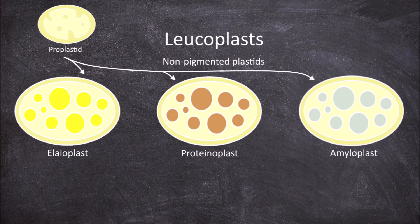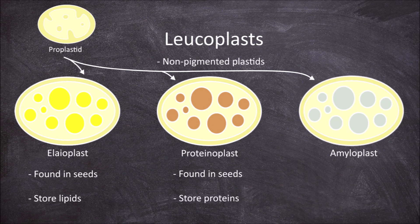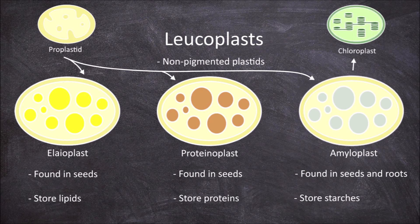The first of these, the elaioplasts, are commonly found in seeds and are specialised to store lipids. The second, the proteinoplasts, are also commonly found in seeds but are instead specialised to store proteins. The third, the amyloplasts, are found in seeds as well as roots and are specialised in storing starches. Amyloplasts can be converted into chloroplasts — for example, this is what happens when roots start greening on exposure to light. This process is sometimes reversible.